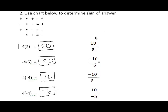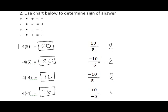Now let's do division. Step one: just divide the numbers. Ten divided by five is two. Step one was to divide — don't even look at the signs yet.